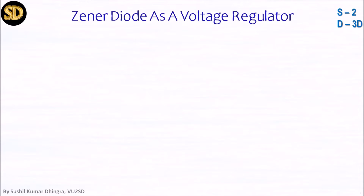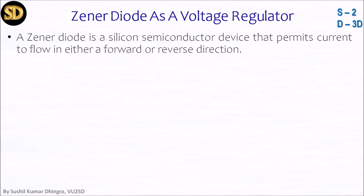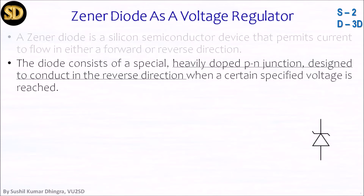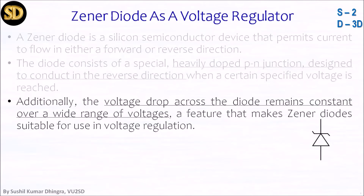Zener Diode as a Voltage Regulator. A Zener diode is a silicon semiconductor device that permits current to flow in either a forward or reverse direction. The symbol is shown on your screen. The diode consists of a special heavily doped P-N junction designed to conduct in the reverse direction when a certain specified voltage is reached. The voltage drop across the diode remains constant over a wide range of voltage, a feature that makes the Zener diode suitable for use in voltage regulation.